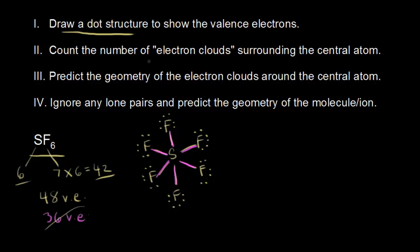We move on to step 2 and count the number of electron clouds surrounding our central atom — regions of electron density. These bonding electrons are a region of electron density, and all of the bonding electrons surrounding our sulfur are regions of electron density, so we consider them to be electron clouds. VSEPR theory says these valence electrons are all negatively charged and therefore they're all going to repel each other and try to get as far away from each other in space as they possibly can.